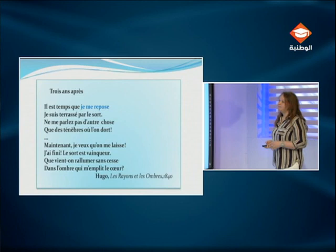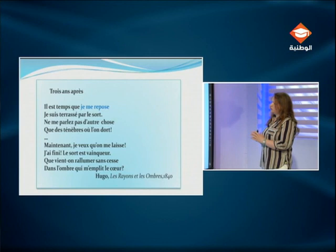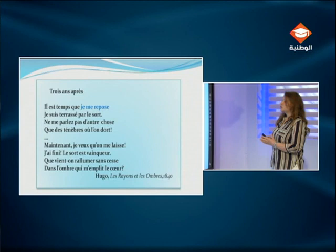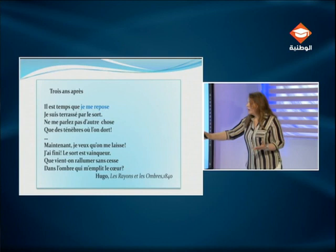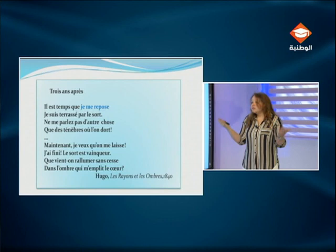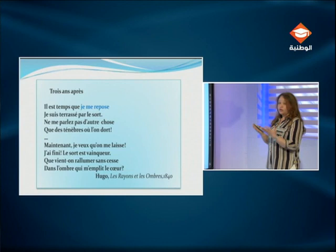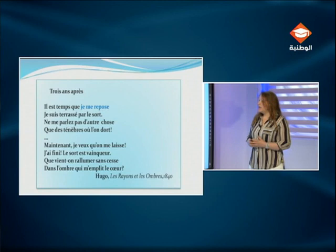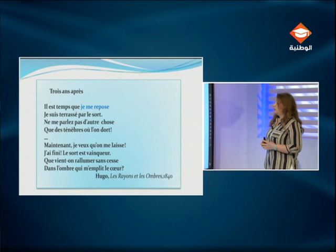Regardons le poème. Premier vers : « Il est temps que je me repose. » Victor Hugo emploie le verbe « se reposer ». Est-ce que ce verbe est à prendre dans son sens dénotatif premier, un simple repos ? Il est terrassé par le sort, triste, dans un mauvais état et il dit : « Il est temps que je me repose. » Le poète parle de la mort : « Il est temps que je meure. » Il a choisi « se reposer » et non « mourir », et c'est exprès.